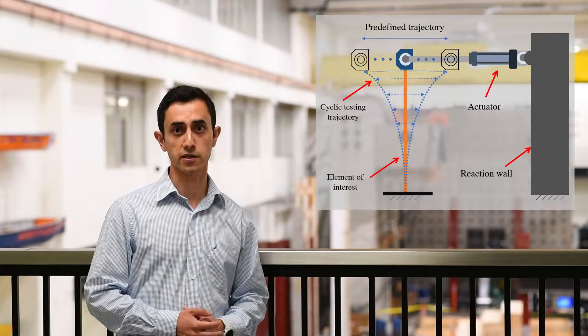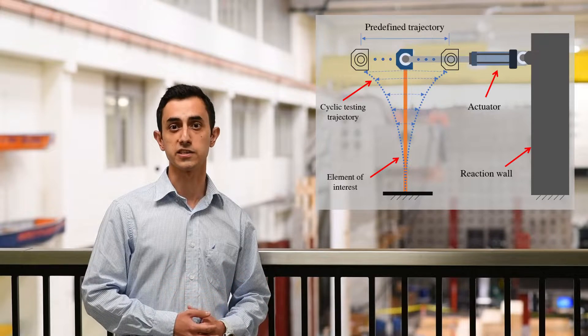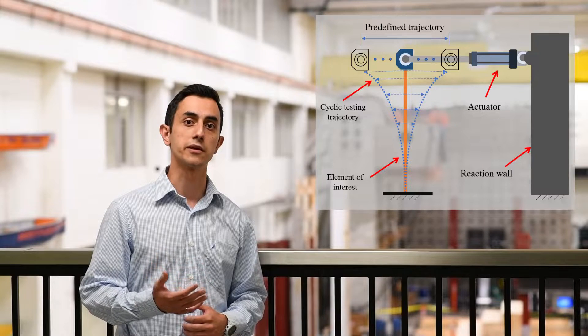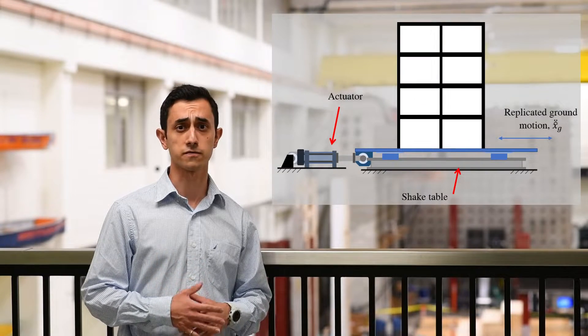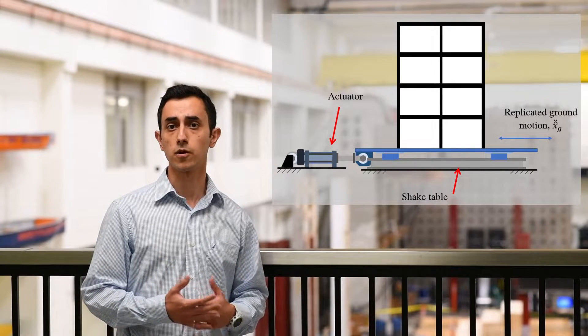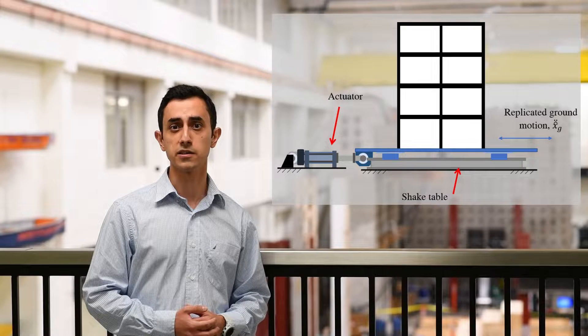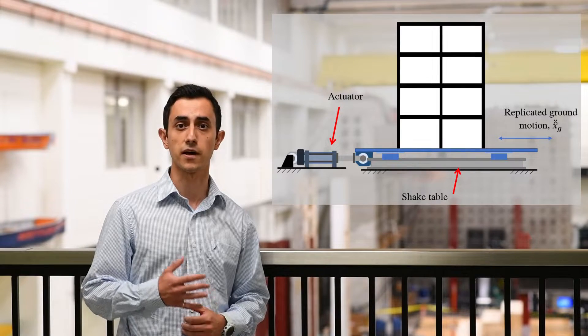The quasi-static cyclic method is very good for obtaining the static hysteretic behavior of structures. However, it's not meant for dynamic and rate-dependent behaviors. The shake table testing method is realistic and accurate, but big shake tables are expensive to build and operate, and the scaling necessary to satisfy similitude laws for smaller shake tables is a very complex task.